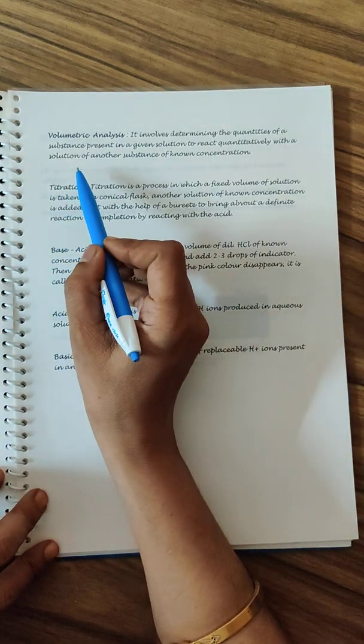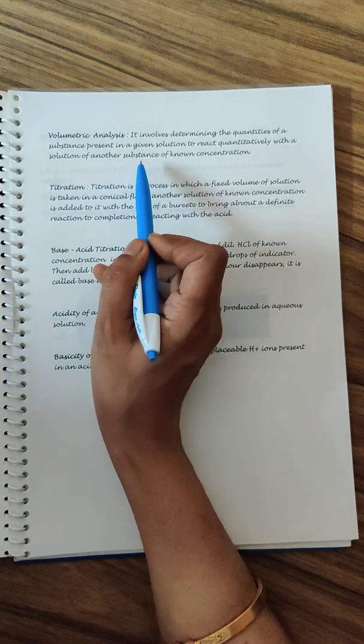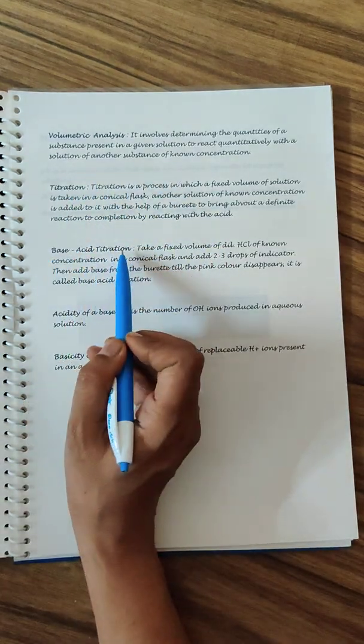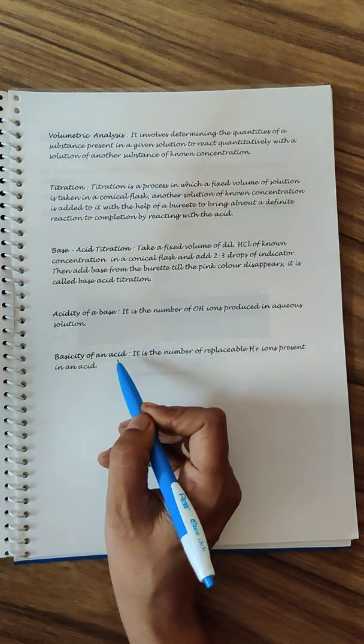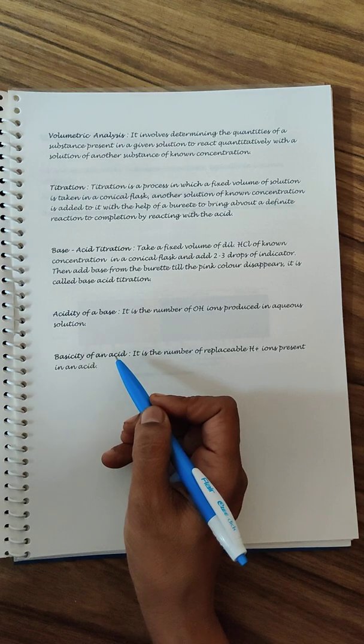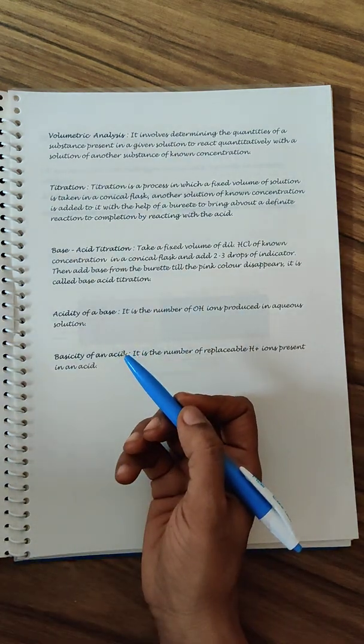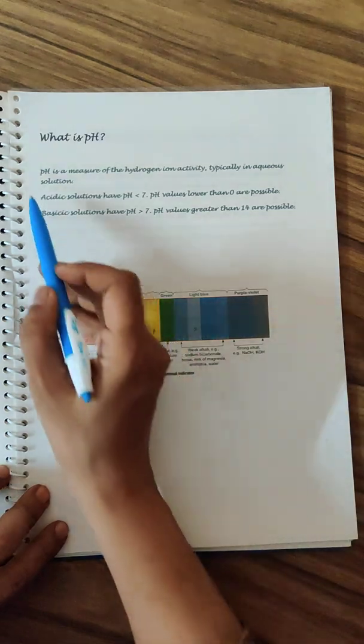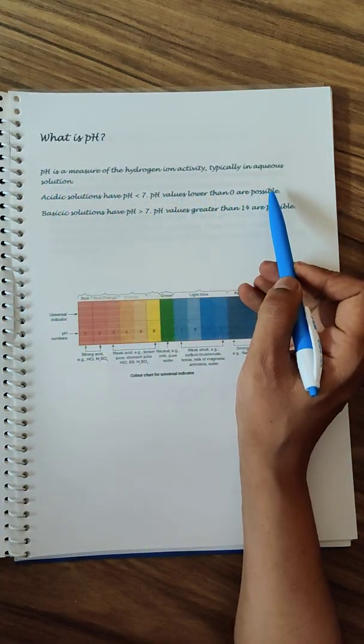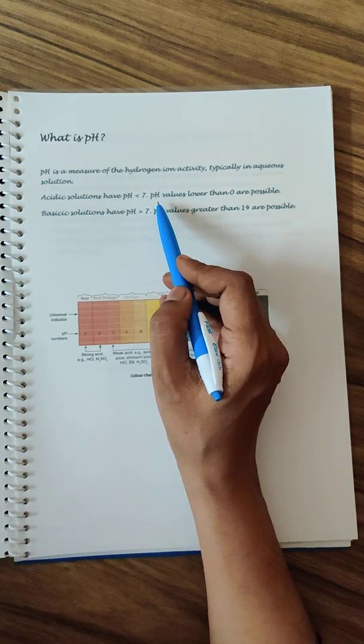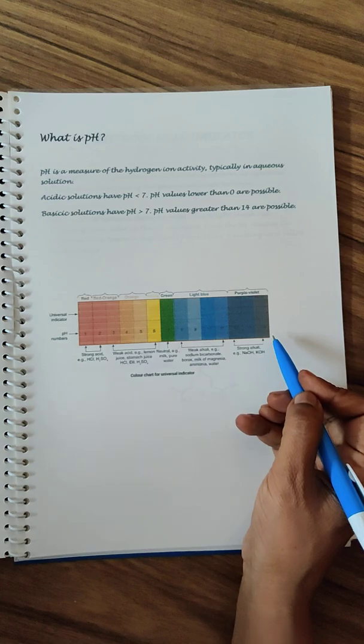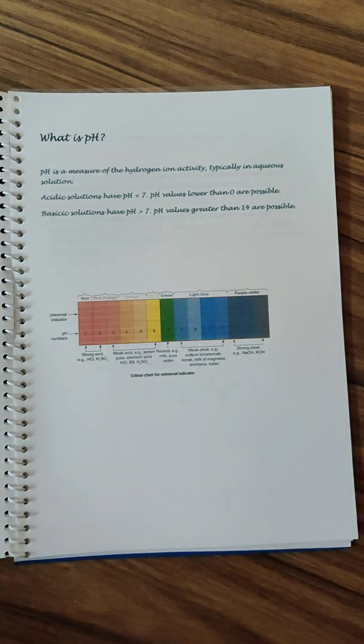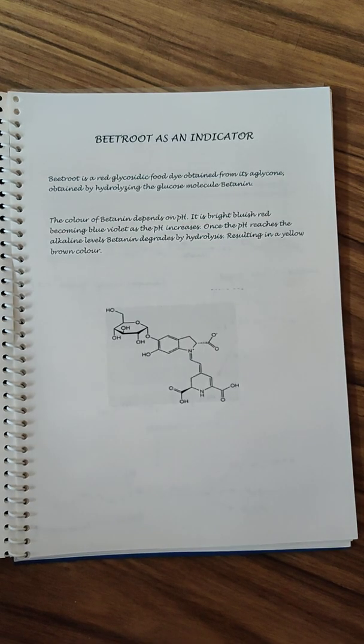Then you have indicators they show color changes under different pH value. She has taken up picture from a book. Since it's a titration based project, she has given the details of the volumetric analysis, titration, acid base titration, acidity of a base and basicity of an acid. These are the informations that you need to mention in the project because this is what would be your viva.